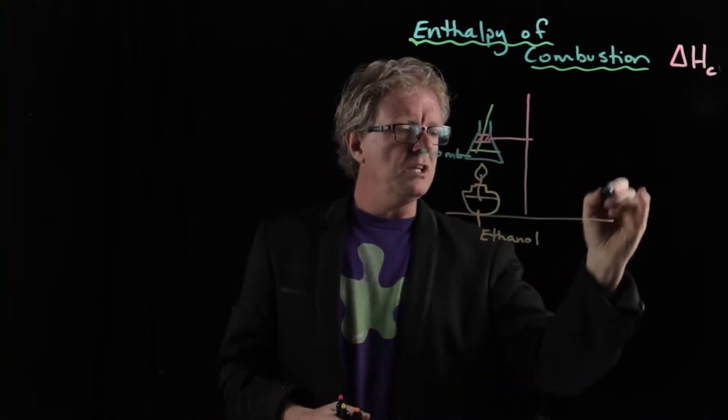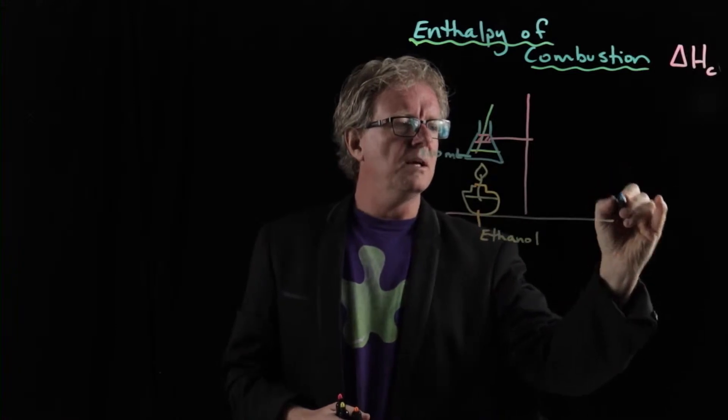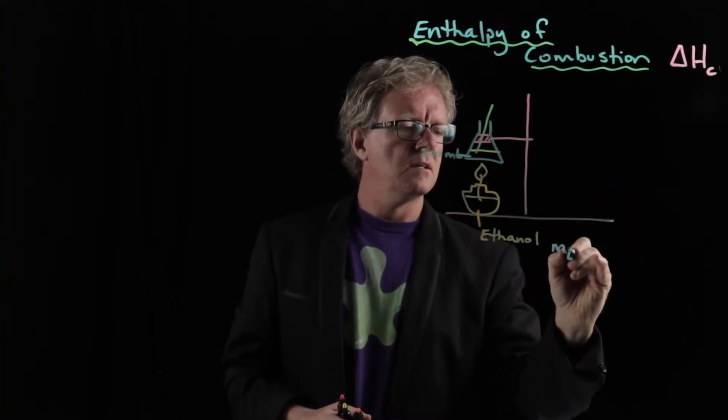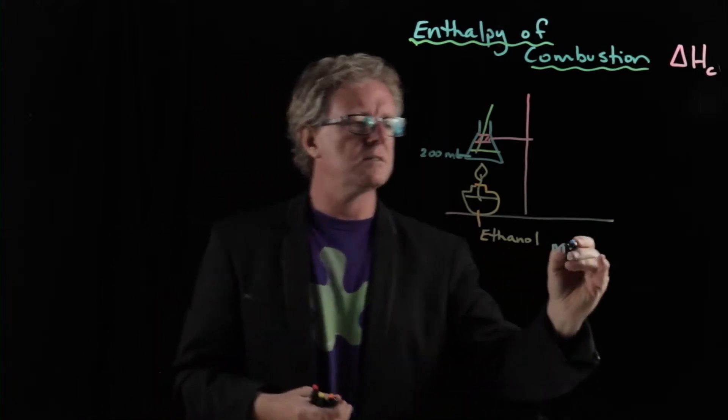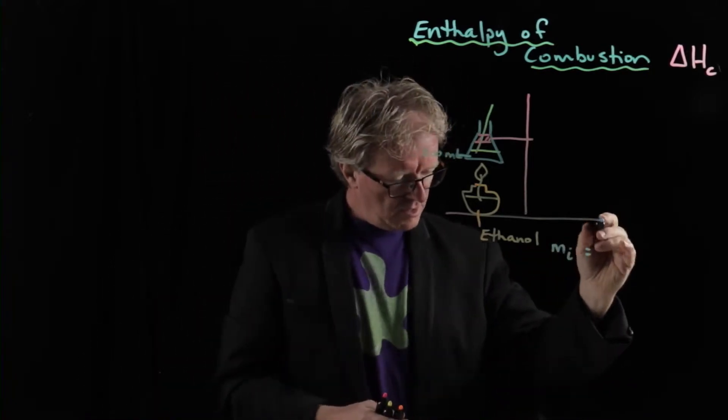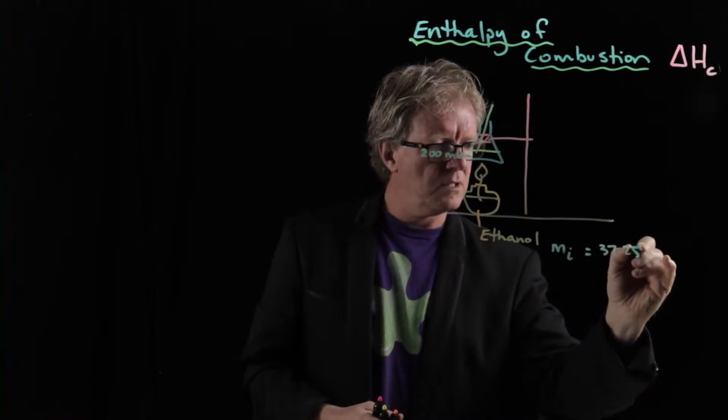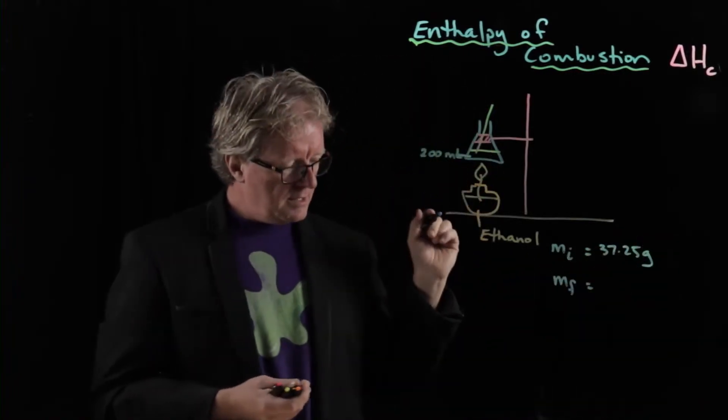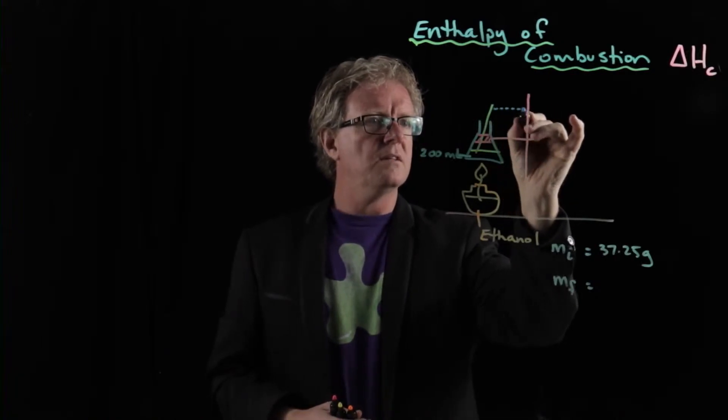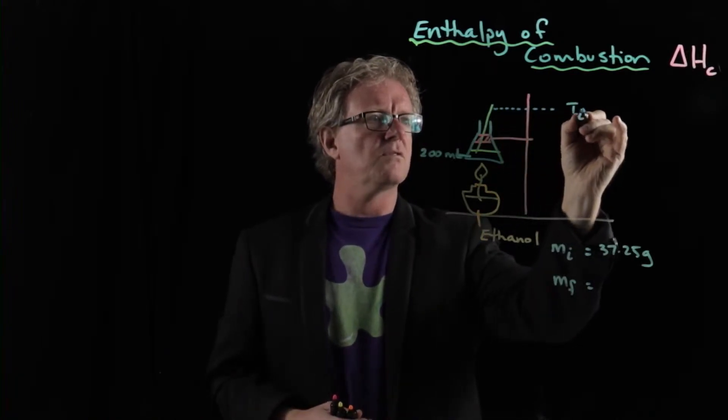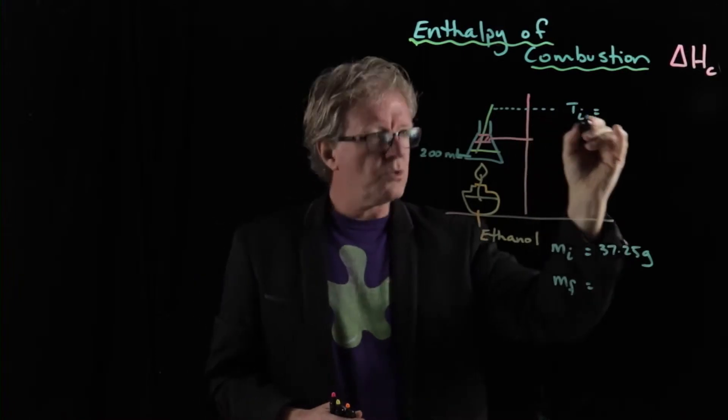Here we have the setup in the lab. We've got a conical flask with 200 mLs of water into which we have a thermometer, and then we have a spirit burner down the bottom with ethanol in it. Under these circumstances, if we write down the data of what you might have observed in the lab: the initial mass, you might record the mass of the spirit burner containing the fuel on electronic balance, and let's say you've got an initial mass of 37.25 grams. And let's say that you measured the temperature of your thermometer, initial temperature was 20 degrees.